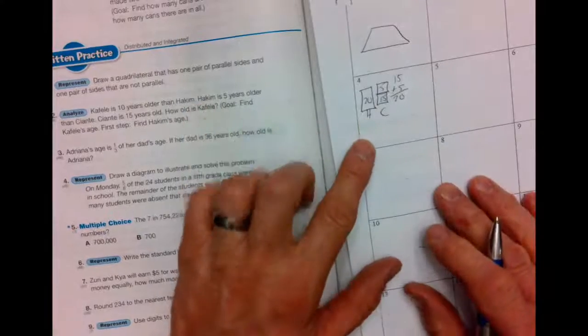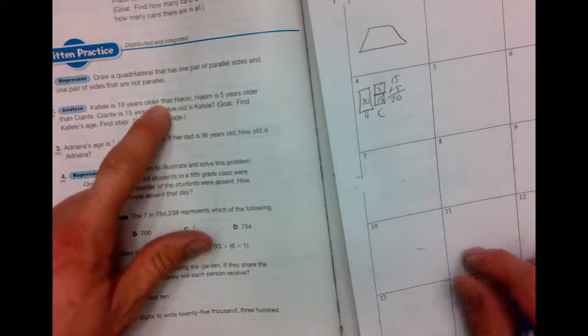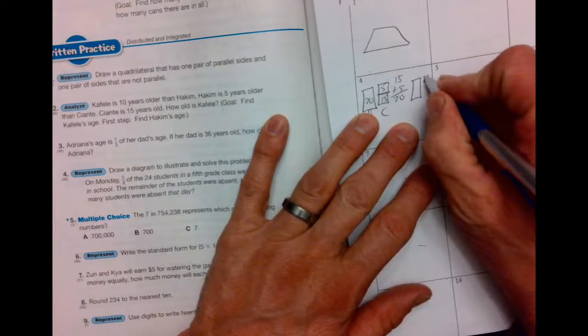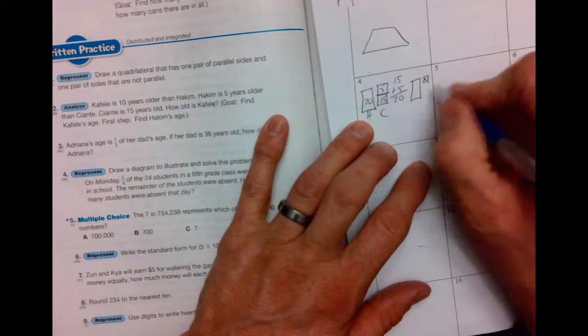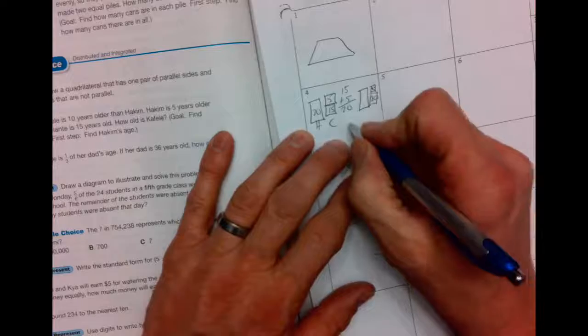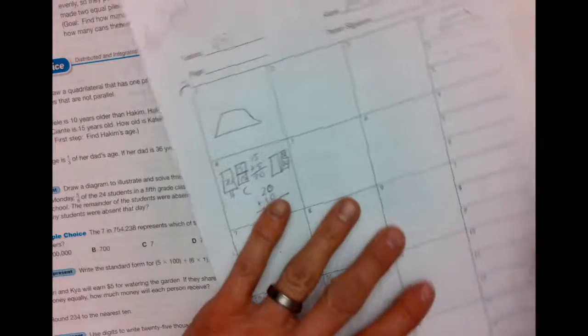So now we can find Hakim by adding 15 plus five is 20. Now let's go on to our second step, Hakim and Kefele. Kefele is 10 years older. So the difference is 10 and we already know this guy is 20. That's hard to see so I'll put it down here. So you're going to add again 20 plus 10, we got a 30-year-old.